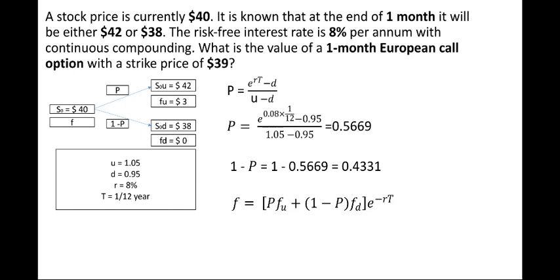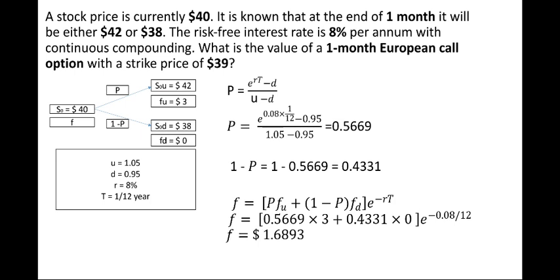We now have all the information. Plugging in: f = [0.5669 × 3 + 0.4331 × 0] × e^(−0.08/12). On solving, we get f = $1.6893. You can pause the screen and verify the values yourself.